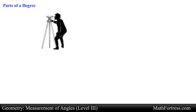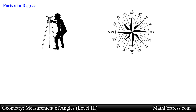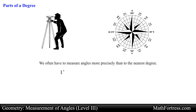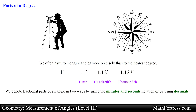In surveying, navigation, and other applications of angle measure, we often have to measure angles more precisely than to the nearest degree. We may have to measure angles to the nearest tenth, hundredth, or thousandth of a degree. We can denote fractional parts of an angle in two ways: by using the minutes and seconds notation, or by using decimals.